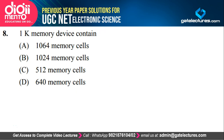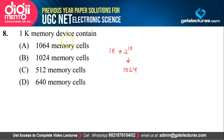A 1K memory device contains how many memory cells? 1K refers to 2 to the power 10, which is actually equal to 1024. So in a 1K memory, there are going to be 1024 cells — 2 to the power 10 cells. So option B is the correct one: 1K means 2 to the power 10 cells.